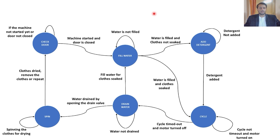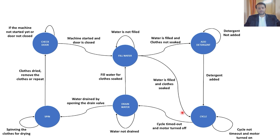After filling water, we add detergent. Basically, how the washing algorithm works is: first you wash your clothes in soap, then you wash them in clean water, and then drain it out and take out the clothes. As you can see, after fill water we go to the add detergent state if the clothes were not soaked in soap previously. We will add the soap or detergent and go to the cycle state.